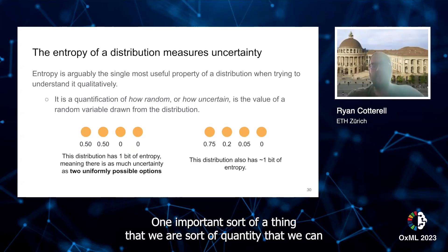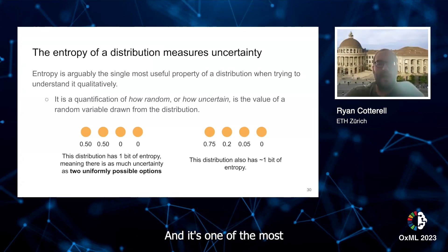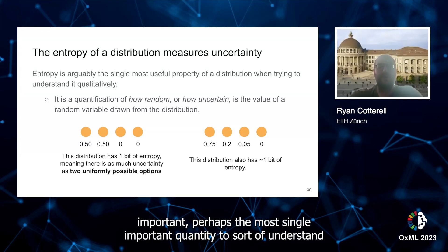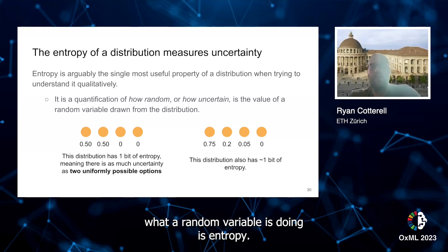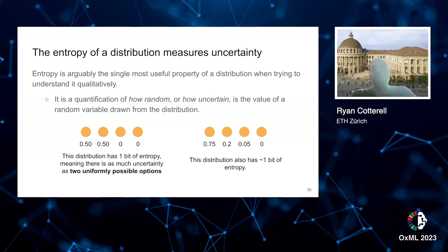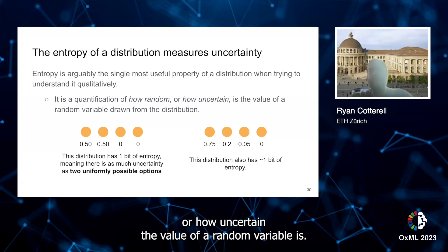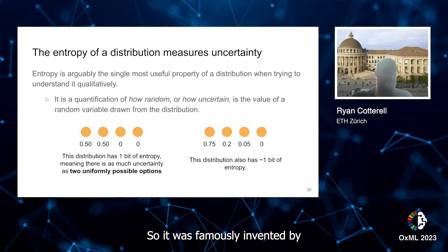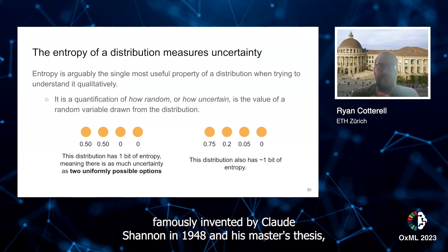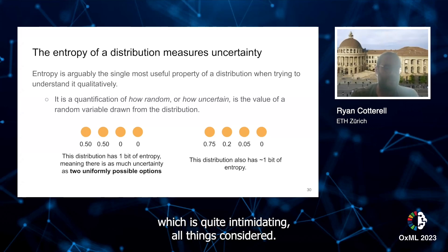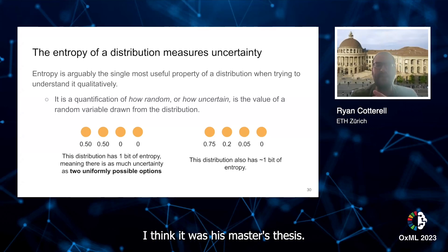One important quantity that we can compute for a language model — and perhaps the single most important — is entropy. Entropy is a quantification of how random or how uncertain the value of a random variable is. It was famously invented by Claude Shannon in 1948 in his master's thesis, which is quite intimidating, all things considered.